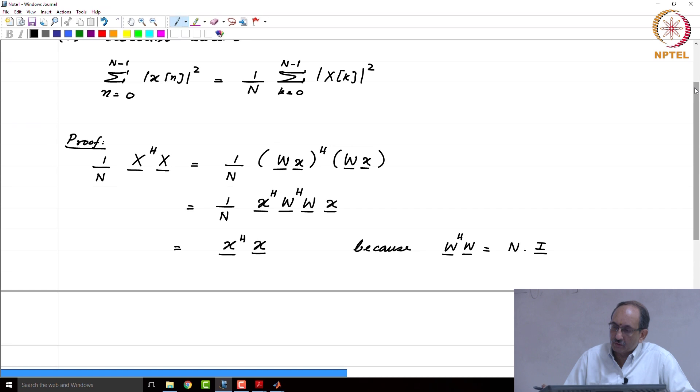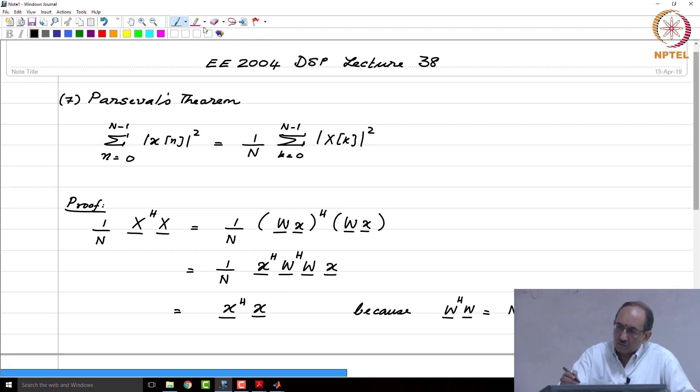Actually, the implication of this is the DFT is a norm preserving transform because this after all is the norm of the signal or the vector in the time domain and this is the norm of the vector in the frequency domain.